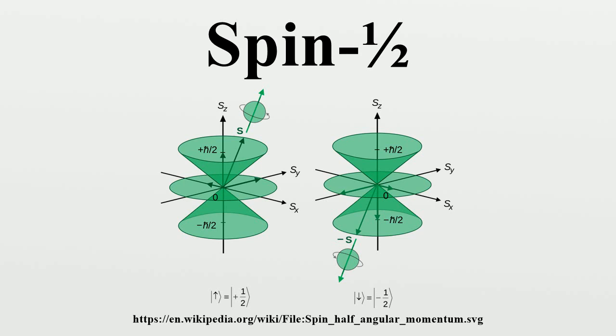It was found that for silver atoms, the beam was split in two. The ground state therefore could not be integral, because even if the intrinsic angular momentum of the atoms were as small as possible, one, the beam would be split into three parts,